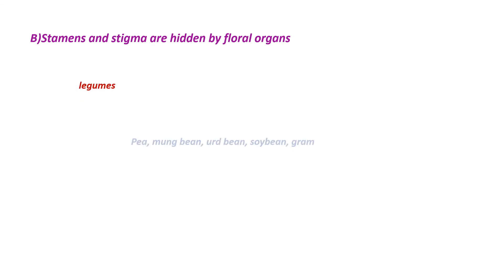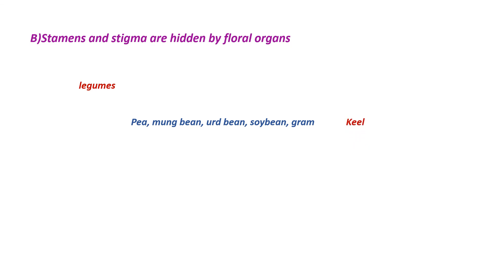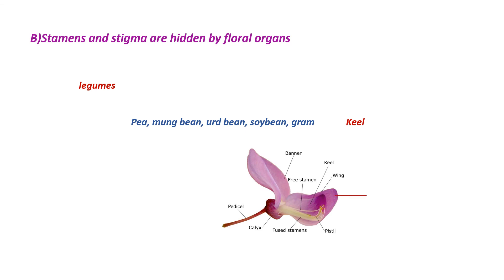In some plants the stammens and the stigma are hidden by floral organs to ensure self pollination. This is seen in legumes like pea, mung bean, urad bean, soya bean, and gram, in which the keel petal encloses the stammens and stigma to ensure self pollination. If you see this image, this is the keel petal which has enclosed the stammens and stigma to ensure self pollination.